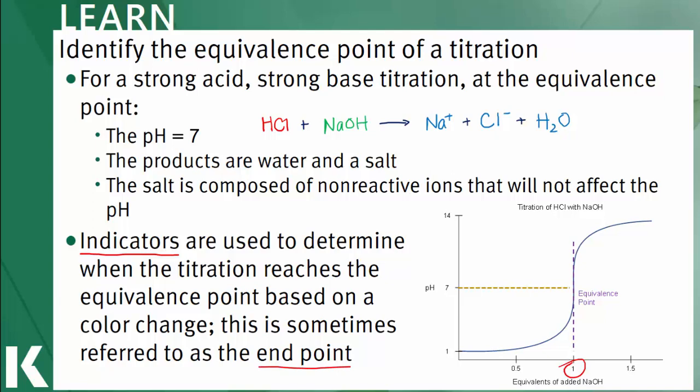The endpoint is a physical property of the indicator, so the pH at which the color changes, whereas the equivalence point is a stoichiometric and theoretical point which reflects neutralization. As such, there is a small but usually negligible difference between the endpoint and the equivalence point.